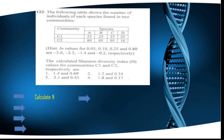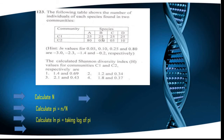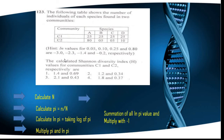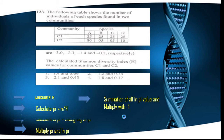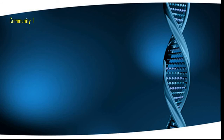The general procedure is: first, calculate the total number of individuals for each community; then calculate pi, the proportion of each species among all individuals; then take the natural log of that pi value; multiply pi by ln(pi); and finally sum all pi × ln(pi) values and multiply by minus one. The ln values are usually given in the question.